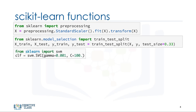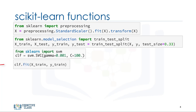Then you can set up your algorithm. For example, you can build a classifier using a support vector classification algorithm. We call our estimator instance CLF and initialize its parameters. Now you can train your model with the train set. By passing our training set to the fit method, the CLF model learns to classify unknown cases.